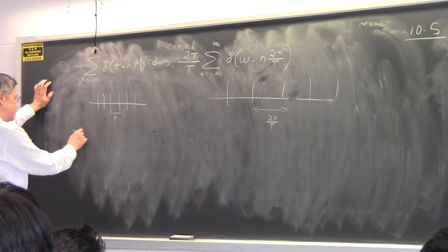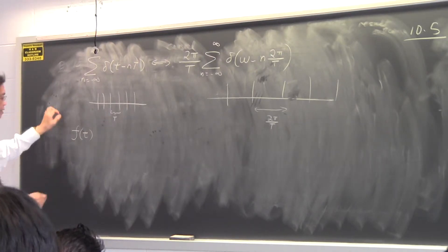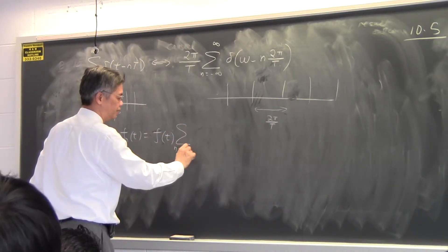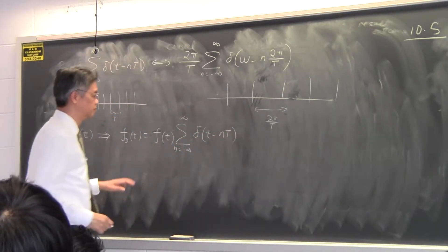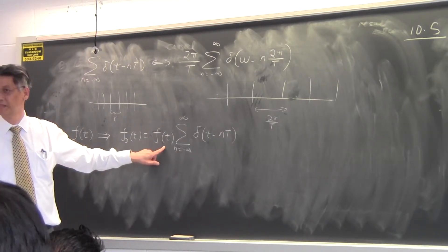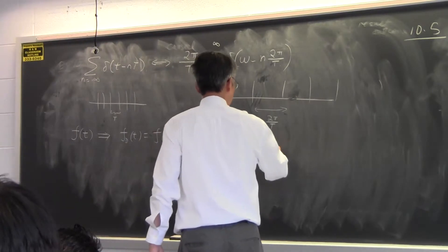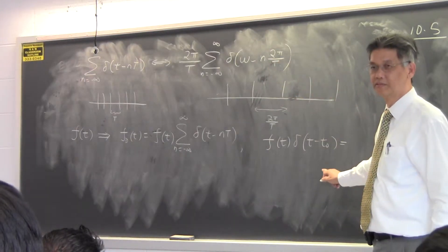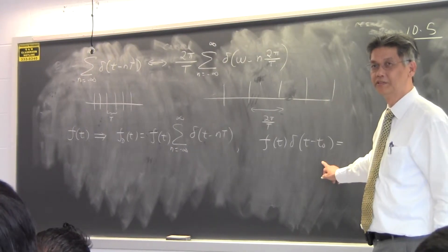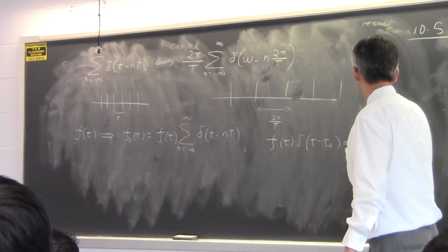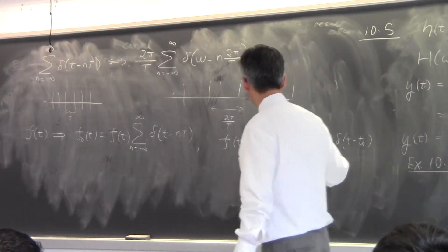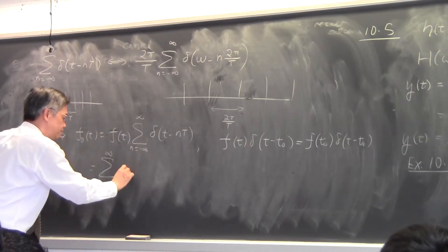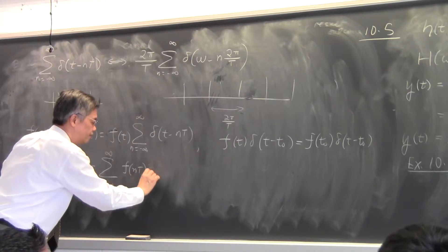You can use that to sample a signal. I can construct, if I have a signal f of T, I can construct a digitized version of this signal by multiplying this signal with an impulse train. And then I can use the sampling property of an impulse function. F of T times delta T minus T0 is equal to what? I think a lot of you do not know this. F of T times the delta function can be simplified to F of T0 times the delta function. It was in your homework, and quite a number of you asked me about this. So, this can be simplified. If I apply that theorem, sampling theorem, or sampling property term by term, so I have this instead.